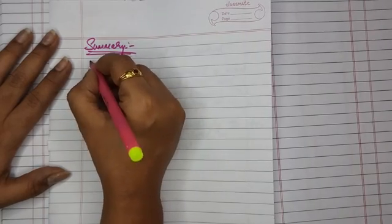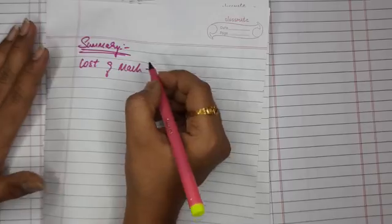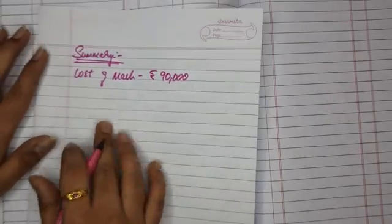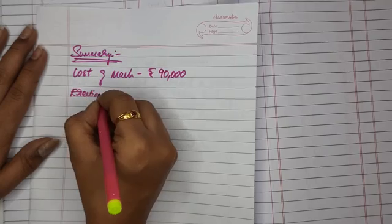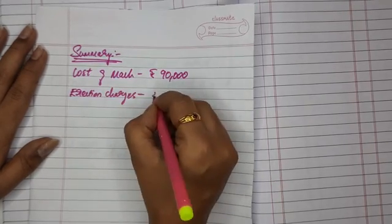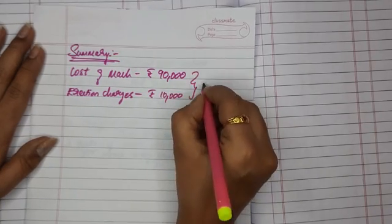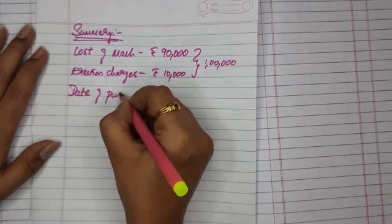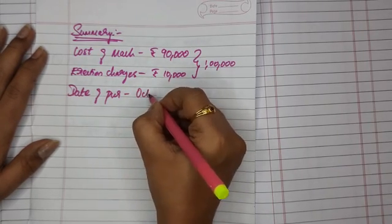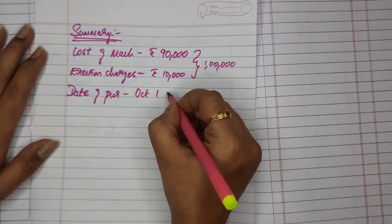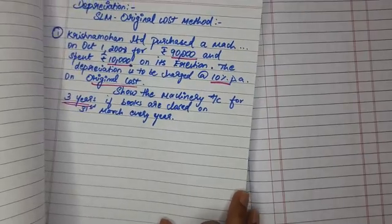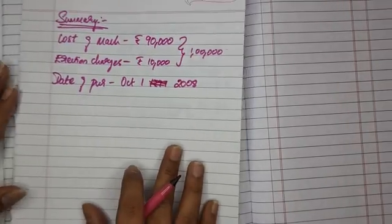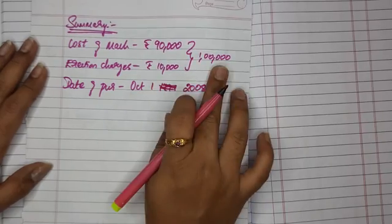So first, what is given? Cost of machinery — the machinery was purchased for exactly 90,000 rupees. Next, erection charges — erection charges are 10,000 rupees. So total amount spent is 1 lakh. Date of purchase is October 1, 2008.